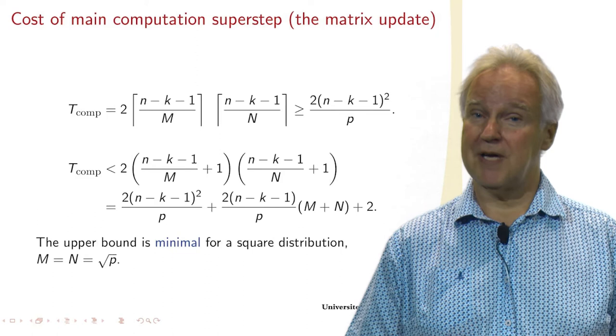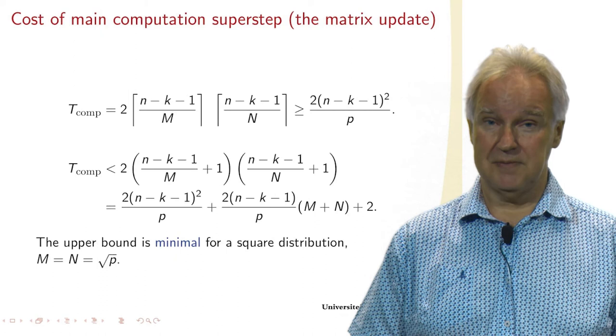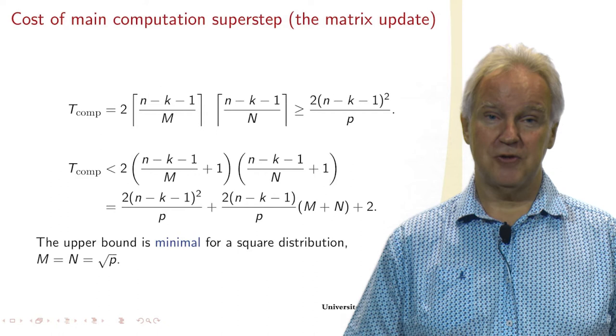But we also have an upper bound. That's if we round upwards, then we add at most one. So if we simplify that, we get a formula which contains a term M plus N.